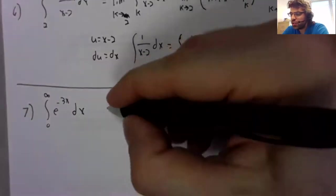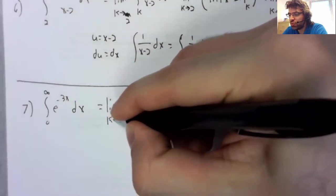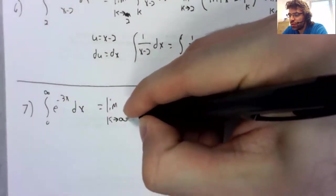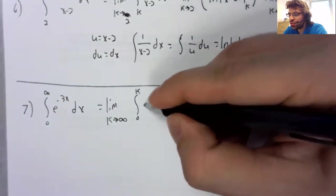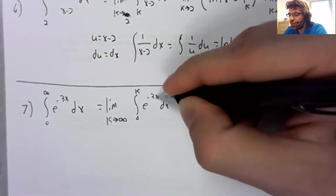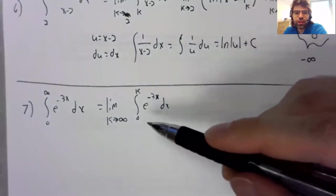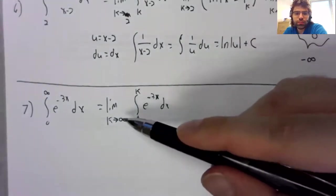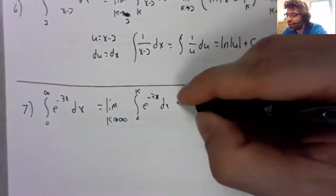Seven, another improper integral. Once again, we replace a limit of integration with a limit.